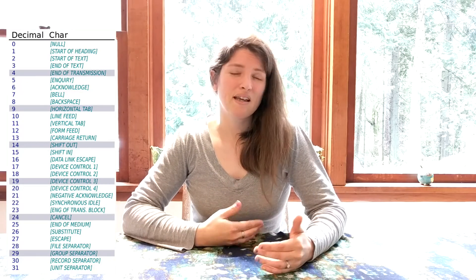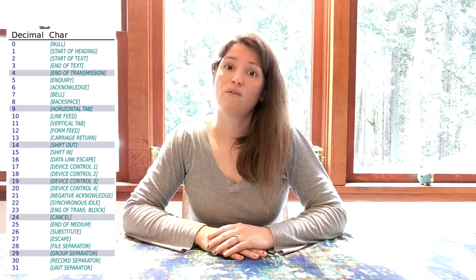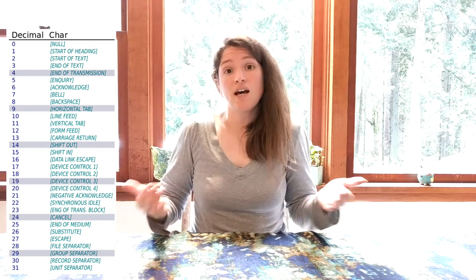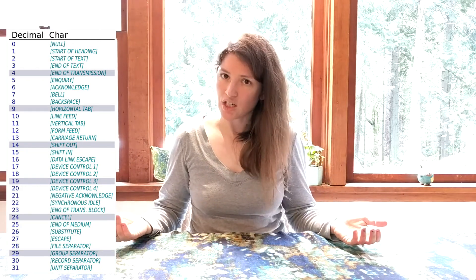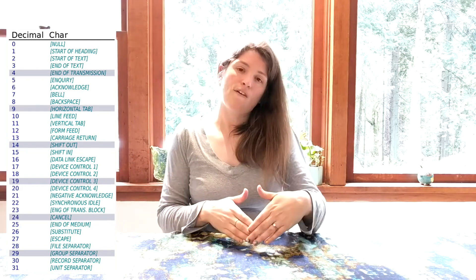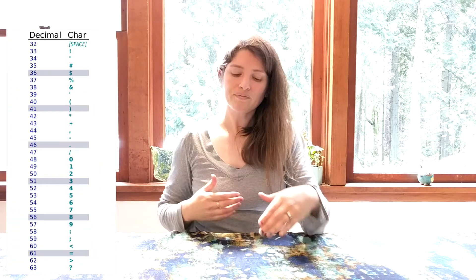The first part of our ASCII table is broken up into commands — things like backspace, whether shift is on or off, or end of transmission. That's actually the first 30 digits of our ASCII table.